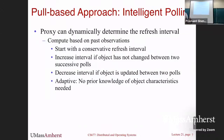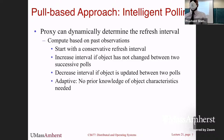If a webpage changes frequently, you discover it is changing every few minutes or every hour and start polling at that frequency. For relatively static pages, you end up with a long polling interval. If the update frequency changes, the system adapts by shortening the interval when the webpage changes between two successive polls. The proxy discovers the update rate of each webpage by polling at different rates, and polls each webpage at a different rate depending on its update frequency.